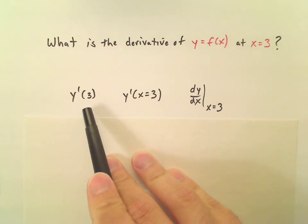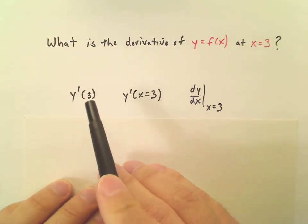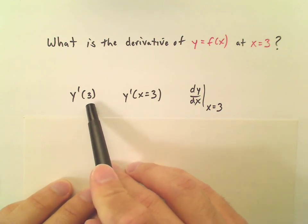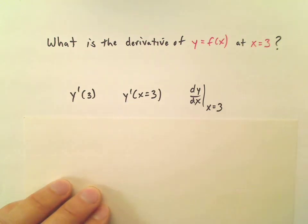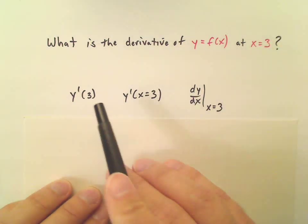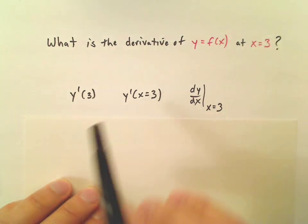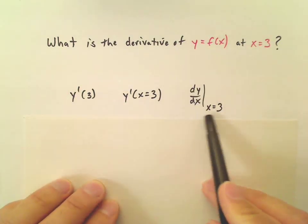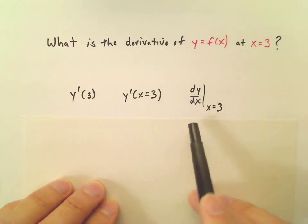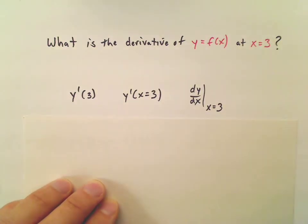People especially have trouble with this notation right here because they see the 3 and the prime and they think that because the 3 is in parentheses here that they need to do that first. That is, they think that when they're given a function, they should substitute x equals 3 at the beginning and then take the derivative. But that's backwards. You're supposed to take the derivative first and then set x equal to 3. This notation over here is a little bit better in that regard. It's a little more clear that first you do this, then you do this.